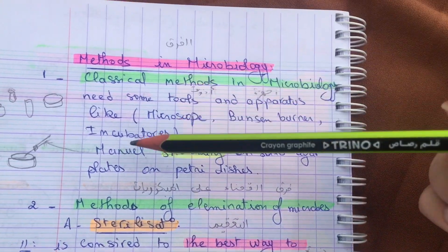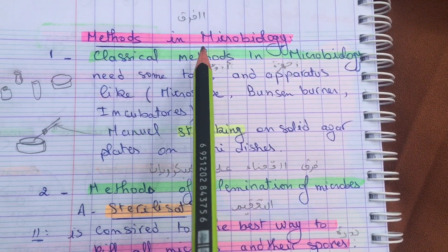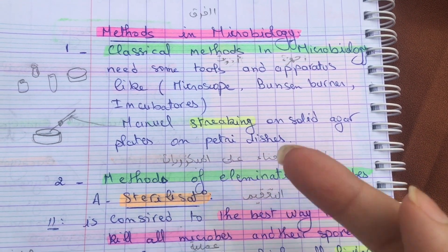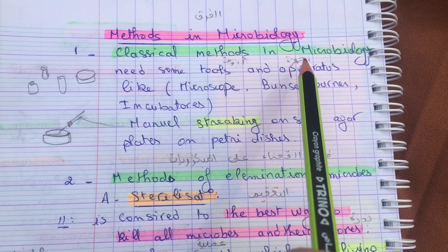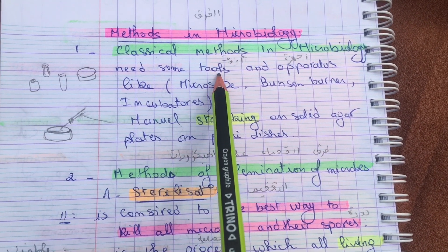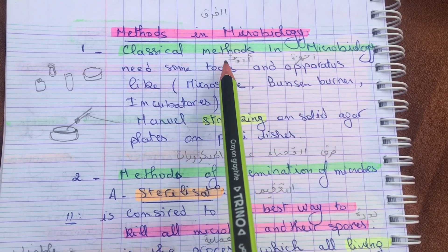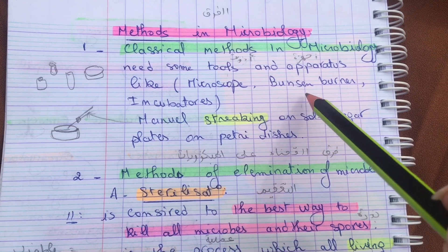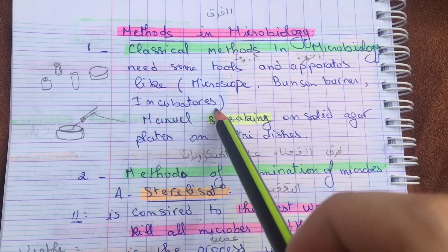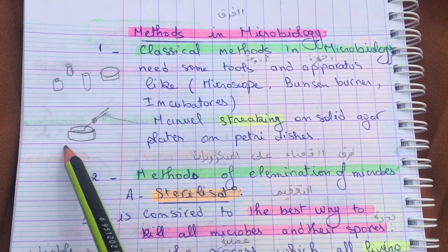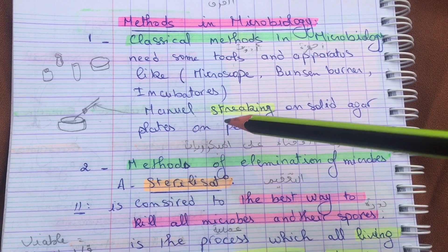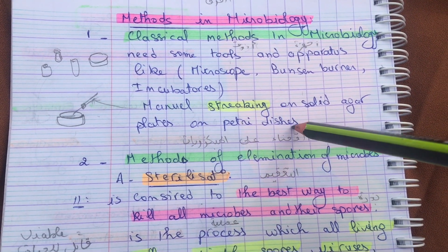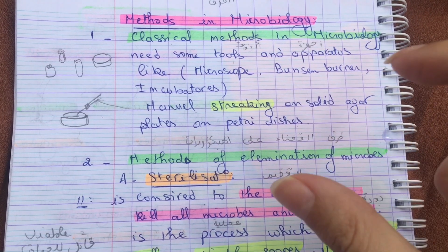The classical method uses tools and apparatus such as microscopes, Bunsen burner, and incubator, as well as manual streaking on a solid agar plate on a Petri dish.